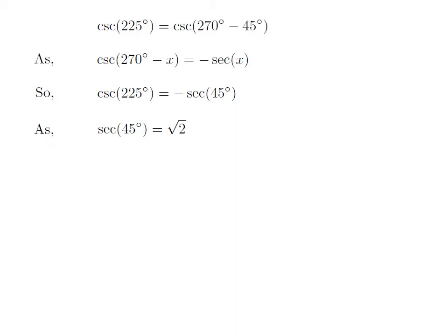We know the value of secant of 45 degrees is equal to square root of 2. So, we get the value of cosecant of 225 degrees is equal to minus square root of 2.